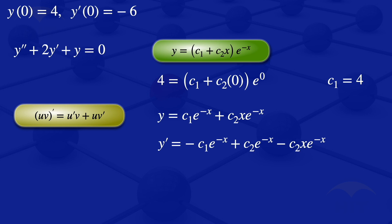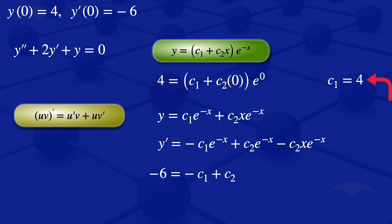Substituting the initial condition y prime(0) equals minus 6 and x equals 0, we get minus 6 equals minus c1 plus c2. Since c1 equals 4, substituting gives minus 6 equals minus 4 plus c2. Therefore c2 equals minus 6 plus 4, which gives c2 equals minus 2.